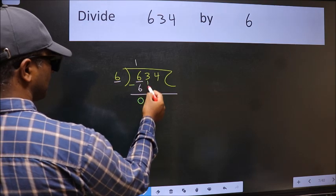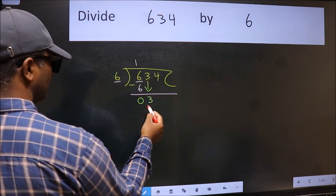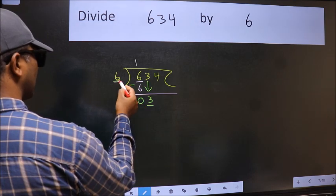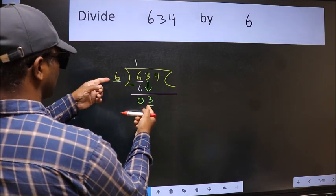After this, bring down the next number. So 3 down. Now here we have 3 and here 6. 3 is smaller than 6.